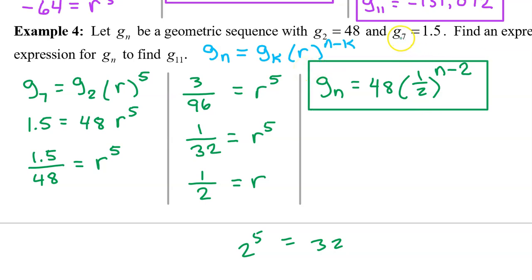If we had picked the g7 instead, it would have looked like this. Gn is equal to 1.5 times 1 half to the n minus 7 power. So either one of these is valid.